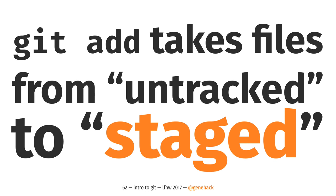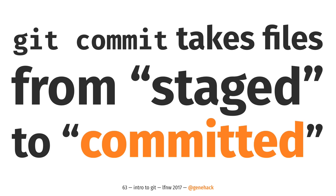To review: git add takes files from untracked to staged, and then git commit takes files from staged to committed. Why did they make it two steps? They made it two steps because frequently when you're making a commit, you may have changes that you don't actually want to commit. For example, you may be trying to fix a bug and you've added in some debugging code — like 'printf hey I got here' — you don't want to commit that. By letting you stage the commit, you can sort of build up and decide: I'm going to commit this line, not this line. It's actually one of the more innovative things that Git has done. It's confusing as hell, but it's actually really useful once you get used to it.